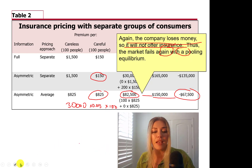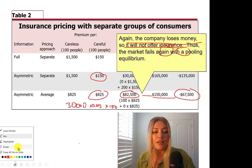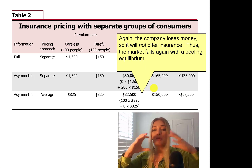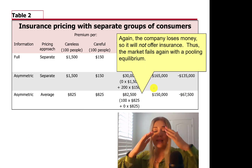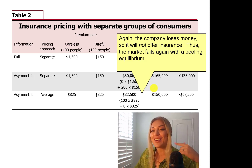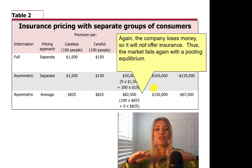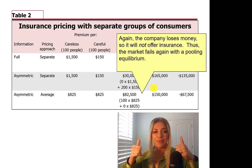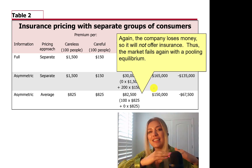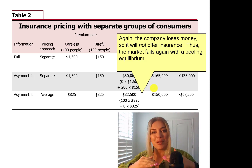The company loses money and will not offer insurance — the market fails again in what we call a pooling equilibrium, where you cannot tell who is who. Car insurance companies are very smart about this. They give you a fair premium to start, then if you get into an accident they increase your premium, and if you are careful with no accidents consistently they will lower your premium.